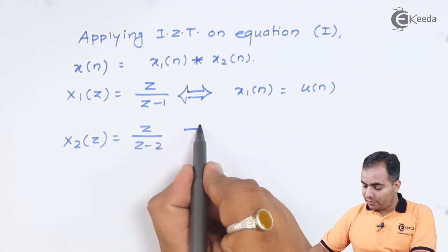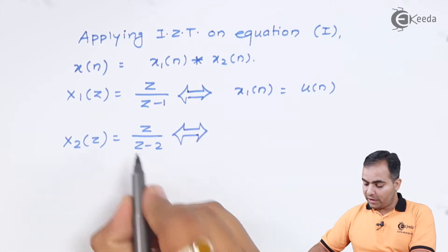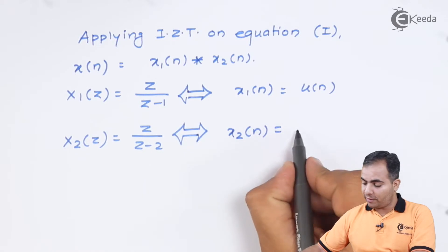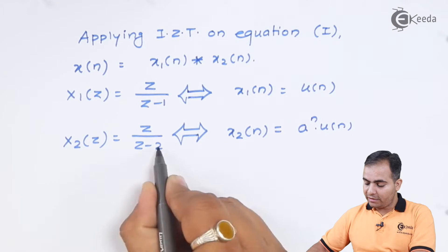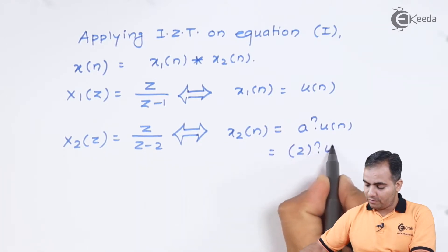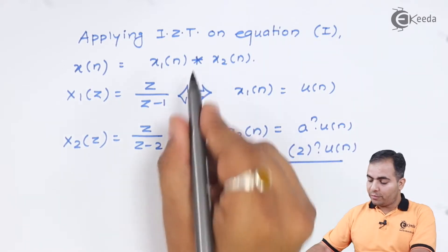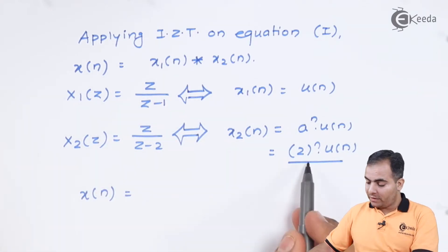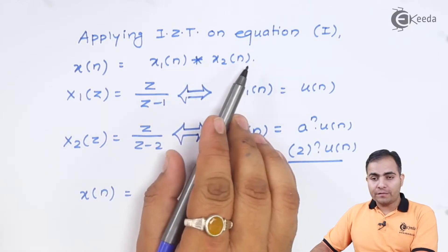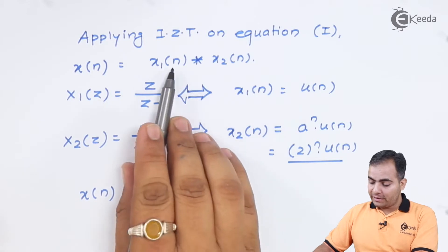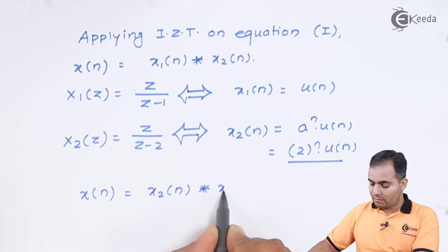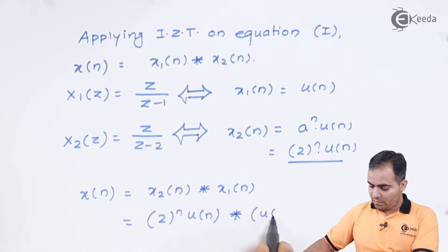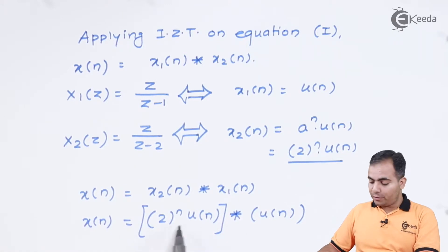For x₂(z) = z/(z-2), we use the time-scaling property. The inverse Z-transform of z/(z-a) is aⁿ u(n), where a = 2. So x₂(n) = 2ⁿ u(n). Substituting both values, x(n) = 2ⁿ u(n) convolved with u(n), which equals the convolution of 2ⁿ u(n) with u(n).